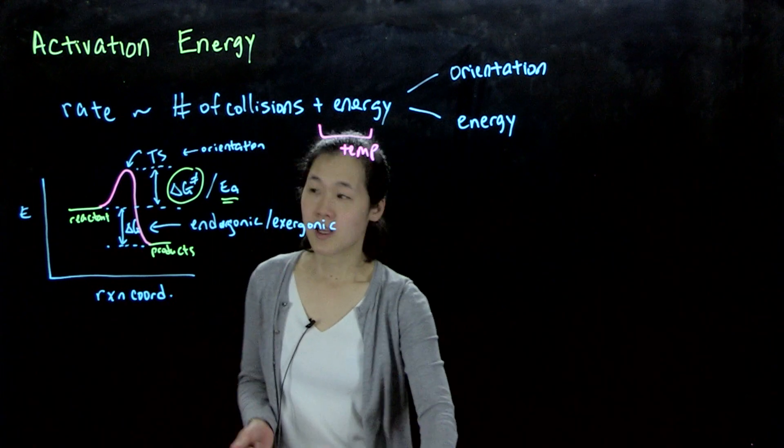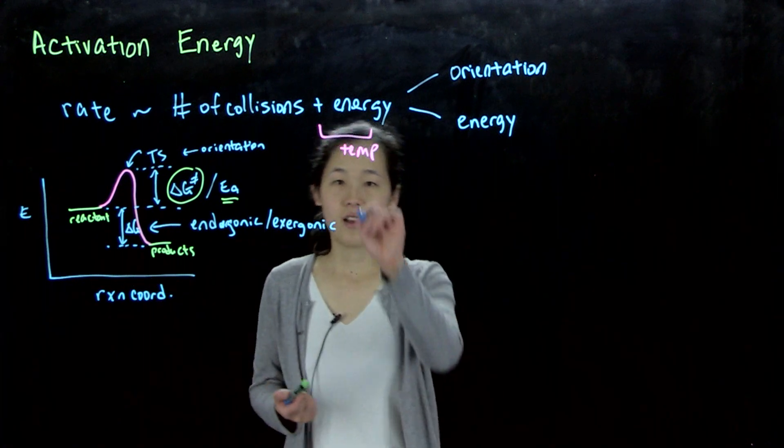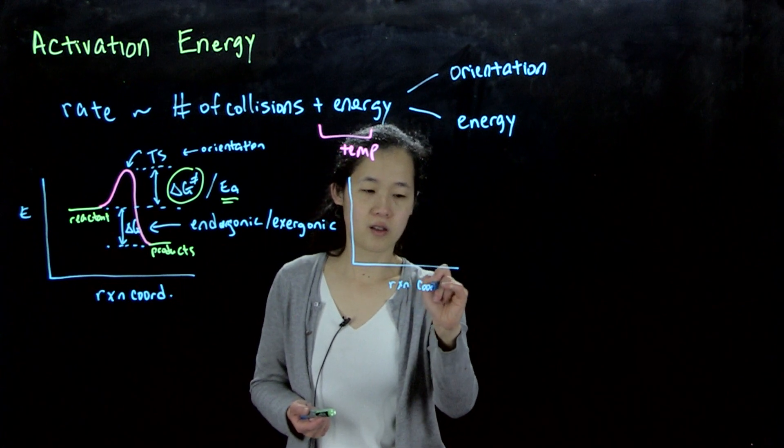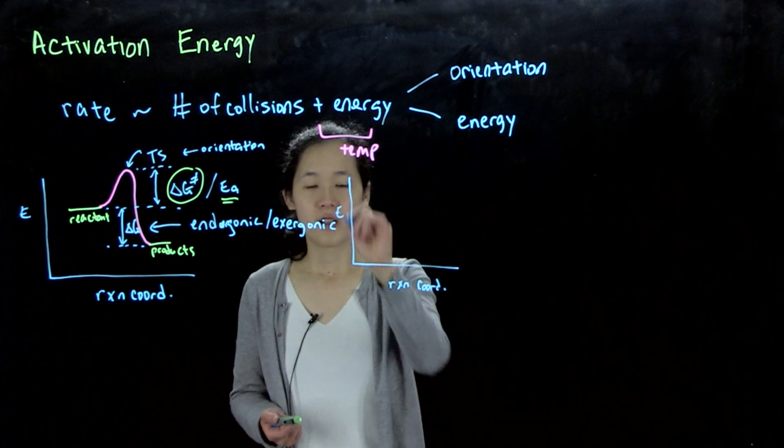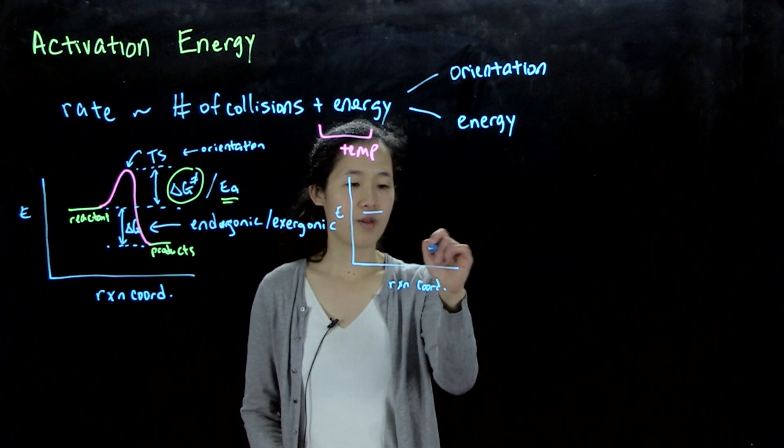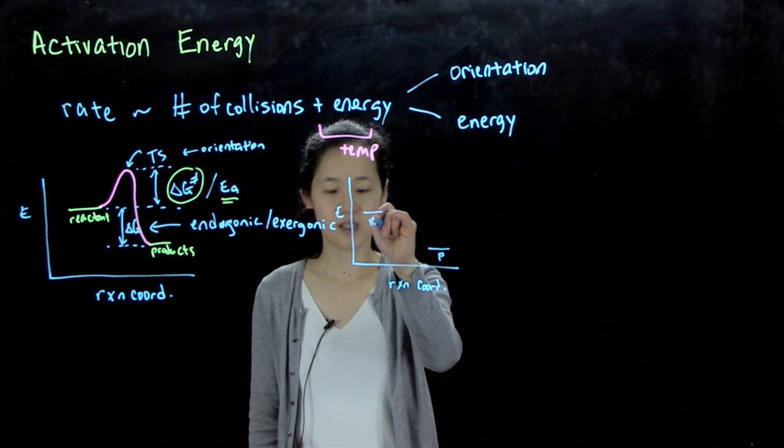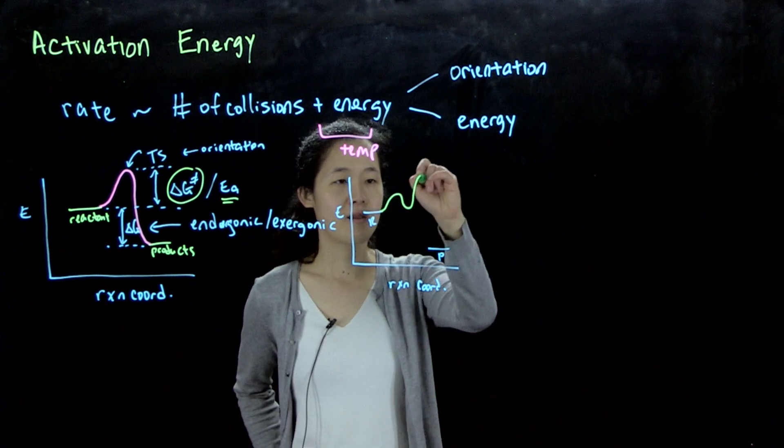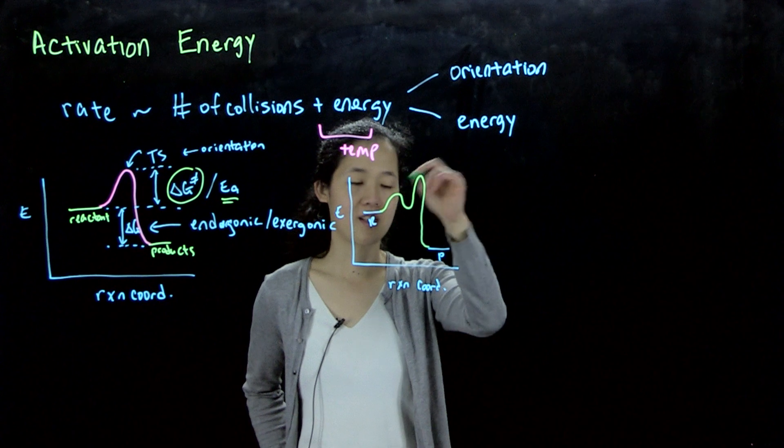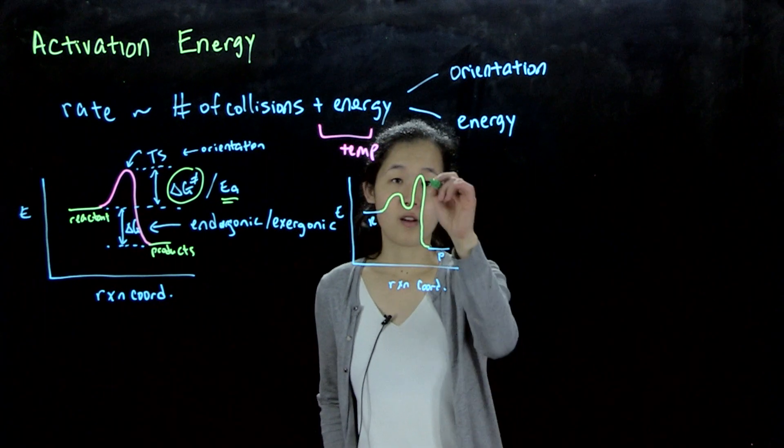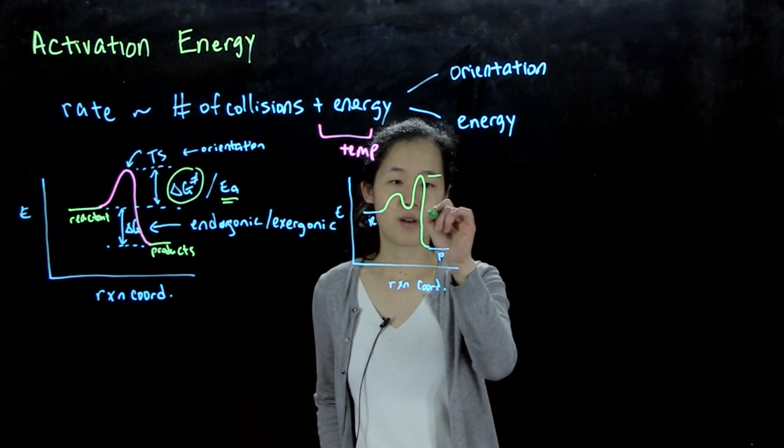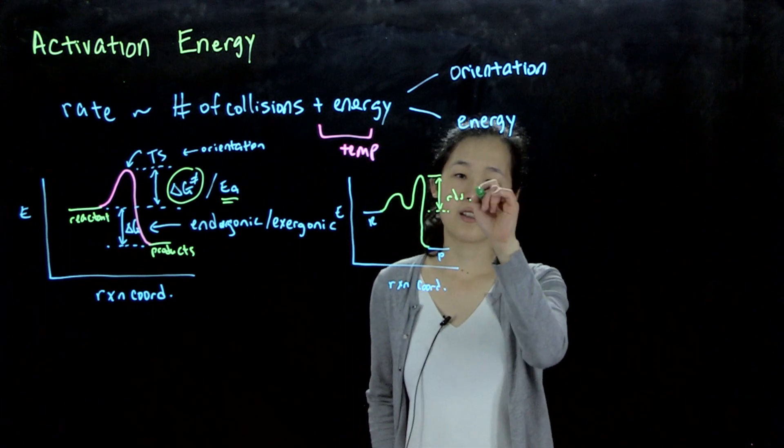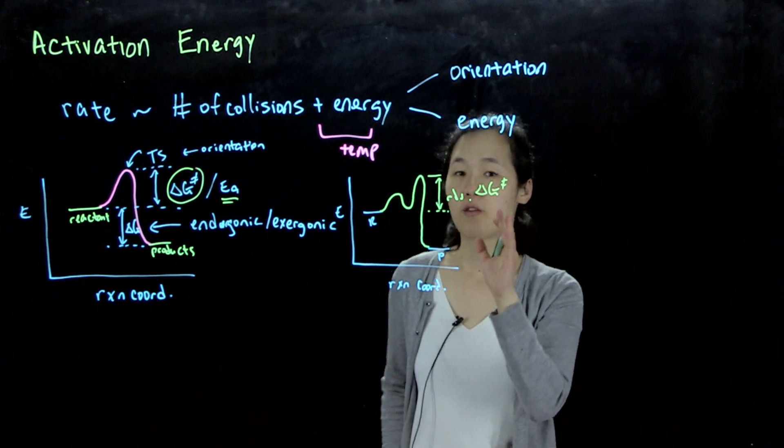One comment I wanted to make is, obviously, if we have a multi-step reaction, we could have a more complicated reaction coordinate diagram. So suppose that we then have reactants and products. And then we have some sort of multi-step thing where you might have this intermediate and this intermediate, or this transition state, this transition state. The highest energy hump, this will be our rate determining step. And then so this would be the relevant delta G double dagger that we would care about.